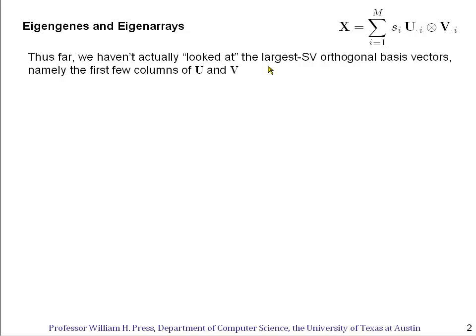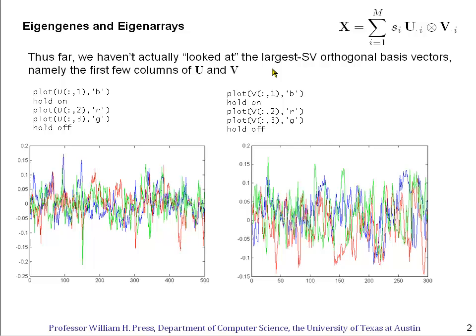But what we haven't done is actually looked at what the columns of U and V look like that would be the directions in space of these singular vectors. So let's do that for our data set which was the gene expression data in yeast.